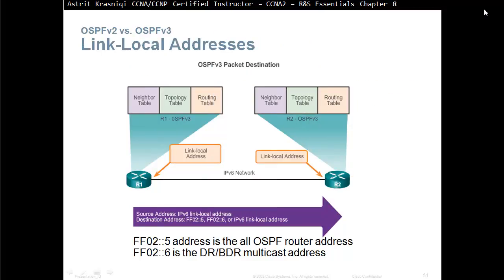OSPF version 2 versus OSPF version 3: both versions keep three tables — the neighbor table (the table of all neighbor adjacencies), the topology table (what the neighbors are telling us, kept in our database), and then we pick the best route from that database and stick it in our routing table. In OSPFv3 the source address is from the link-local address (FE80 and then the rest of the link-local address). The destination address is FF02::5, which is the all OSPF router address, or FF02::6 which is the DR and BDR multicast address, or it can be a link-local address.